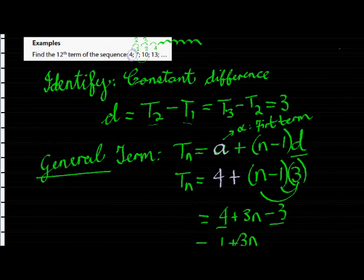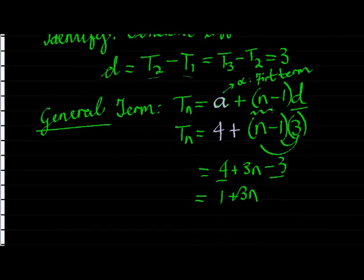So to get the second term, I added once. To get the third term, I've added three twice. So that's what this part of the equation tells me, how many times I'm adding the constant difference, the three. And this is just what I started with.